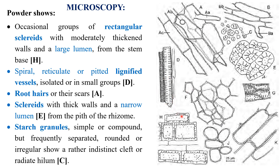Another type of sclereid is present inside the base region with thick walls and narrow lumen. Starch granules are also detected; they are simple or compound, rounded and sometimes irregular in shape with a distinct cleft or fissure. Root hairs are detected in the epidermis of the root of valerian, but the epidermis or cork from the rhizome does not contain root hairs.